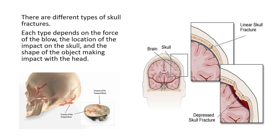There are different types of skull fractures. Each type depends on the force of the blow — what kind of force was applied. According to that force, different types of fractures are created. The location of the impact on the skull also matters — which location on the skull was impacted. And the shape of the object making impact with the head is also important — whatever weapon was used.